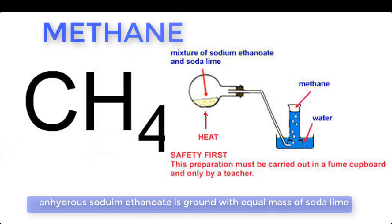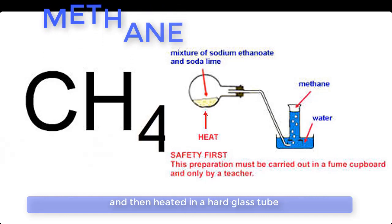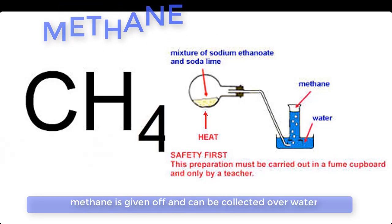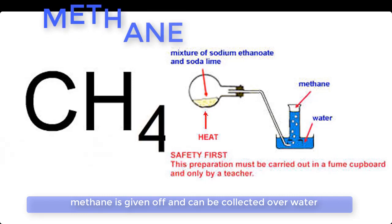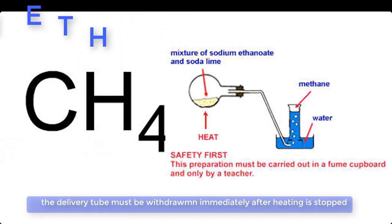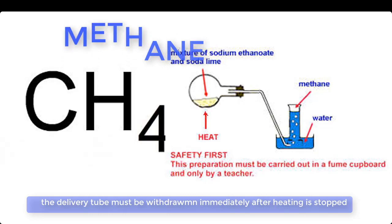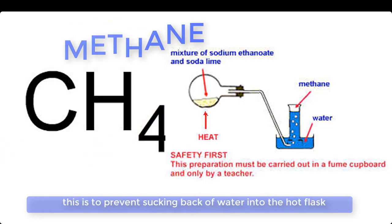Anhydrous sodium ethanoate is ground with an equal mass of soda lime and then heated in a hard glass tube. Methane is given off and can be collected over water. The delivery tube must be withdrawn from the water immediately after heating is stopped, to prevent the suck-back of water into the hot flask.